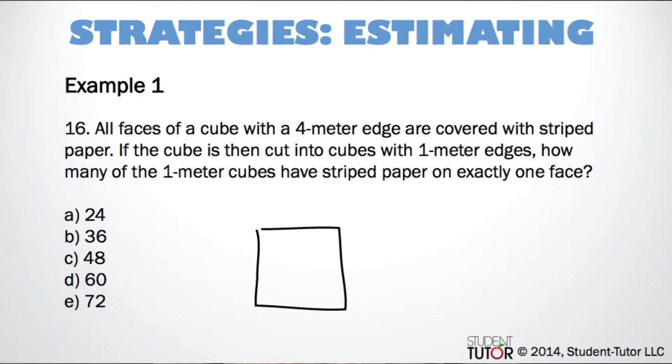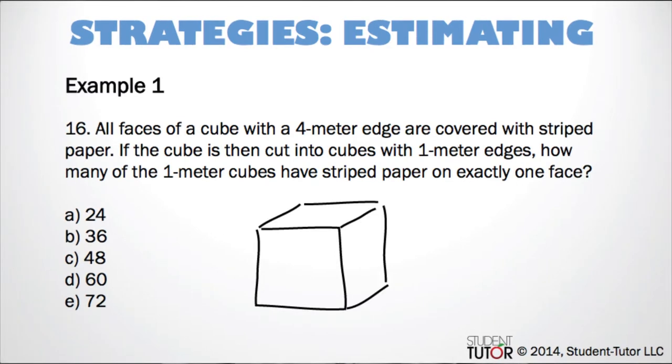All the instructions are right there in the problem. First, we've got a cube. So that's a six-sided square, right? All sides are equal. And it says here the edge is 4 meters. So automatically, all the sides are 4 meters.